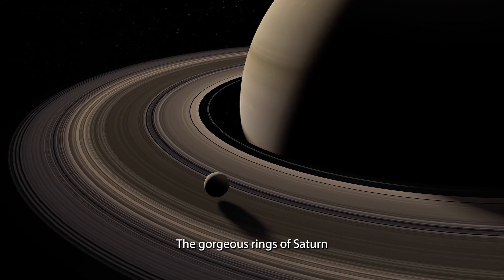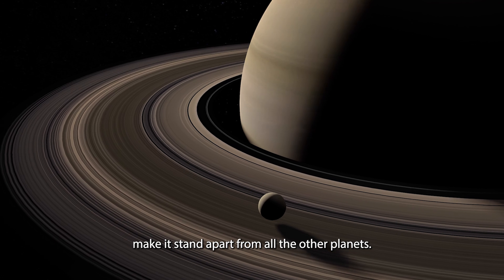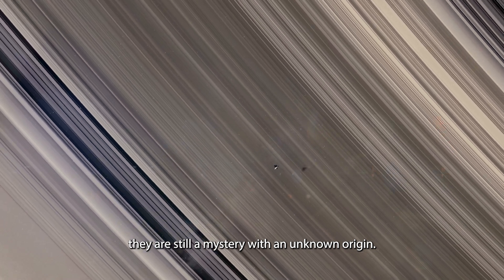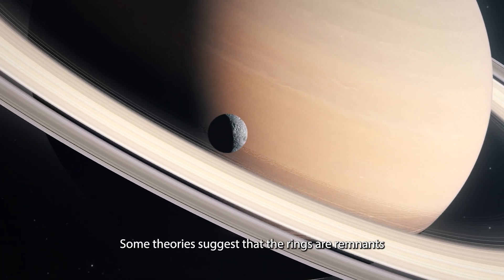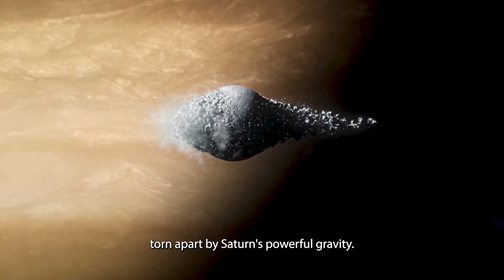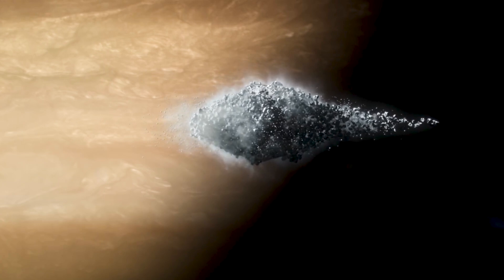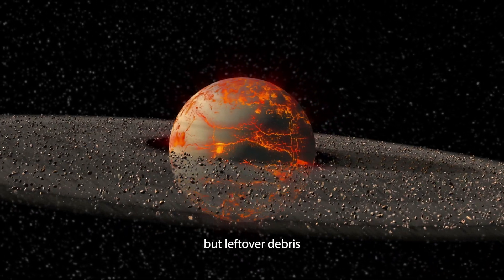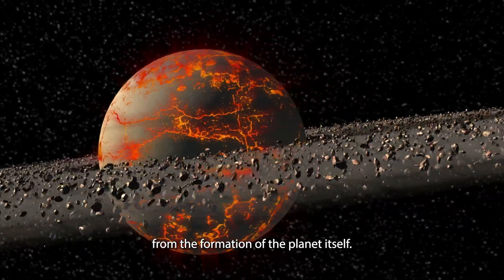The gorgeous rings of Saturn make it stand apart from all the other planets. And yet, they are still a mystery with an unknown origin. Some theories suggest that the rings are remnants of shattered moons torn apart by Saturn's powerful gravity, while others propose that the rings are nothing but leftover debris from the formation of the planet itself.